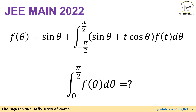Hello everyone, welcome to the sqrt channel. In this video we are going to take another problem from JEE Main 2022. We have f(θ) equals sine of θ plus the integral of sine(θ + t) times cosine(θ) times f(t) dt, for θ between negative π/2 and positive π/2. We need to find the integral of f(θ) dθ between 0 and π/2. Pause the video to think about this problem.